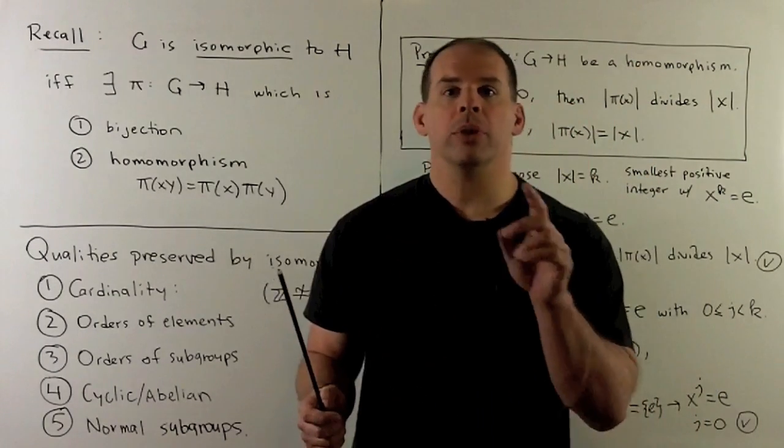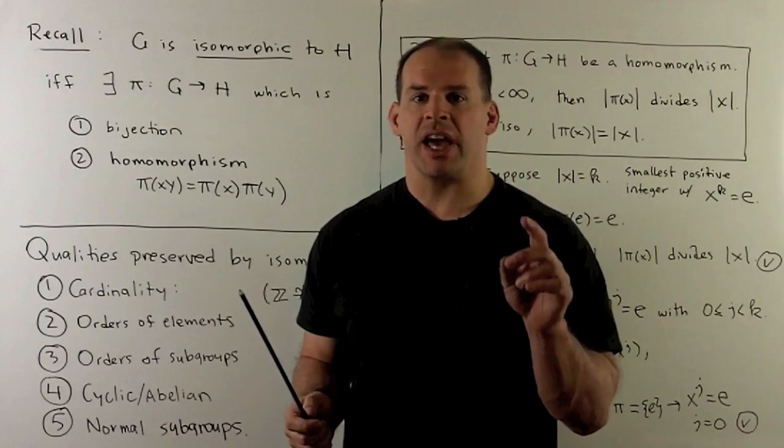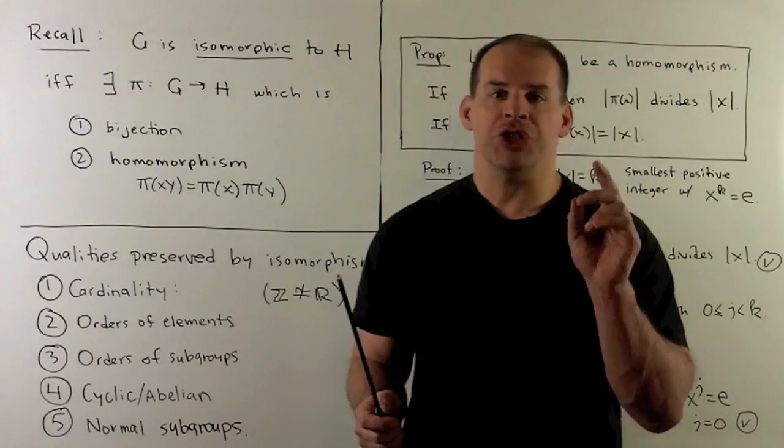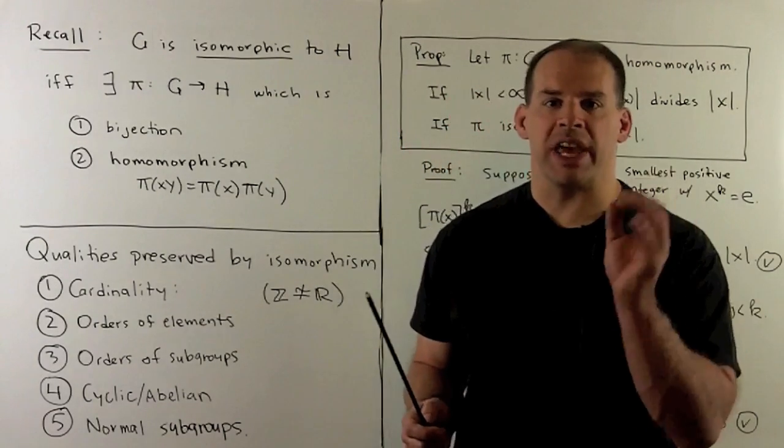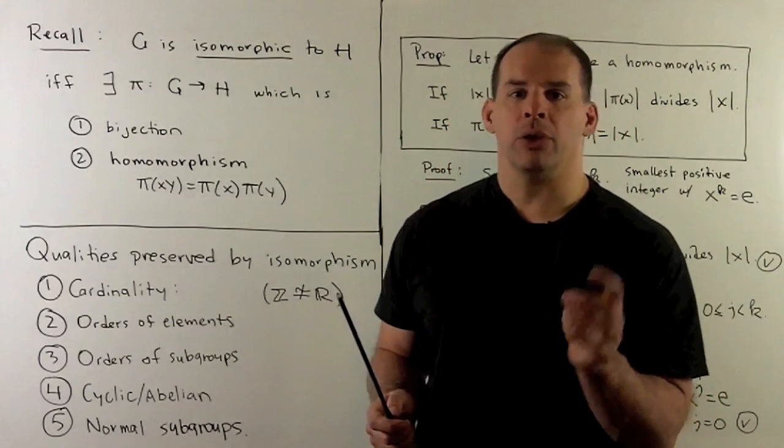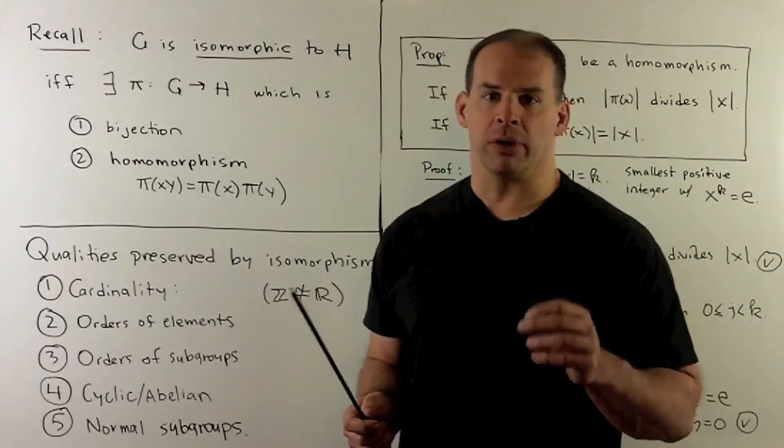Note: what isomorphism essentially says is that G and H are the same group — they're just labeled differently.